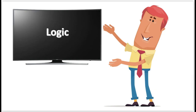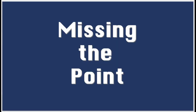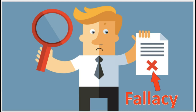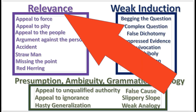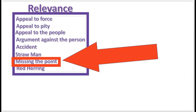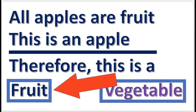Ladies and gentlemen, welcome to this episode of Logic. The missing the point fallacy is the topic of this video. A fallacy is a defect or an error in an argument. Here's a list of some 22 informal fallacies. Missing the point is a fallacy of relevance. The missing the point fallacy is committed when someone draws a different conclusion than the one that is implied by the premise.